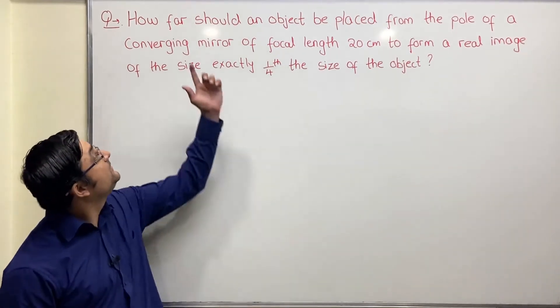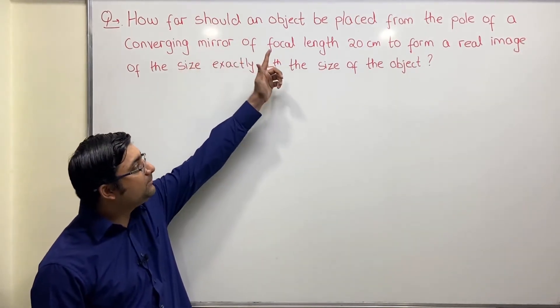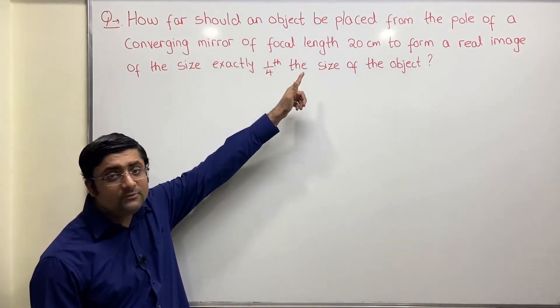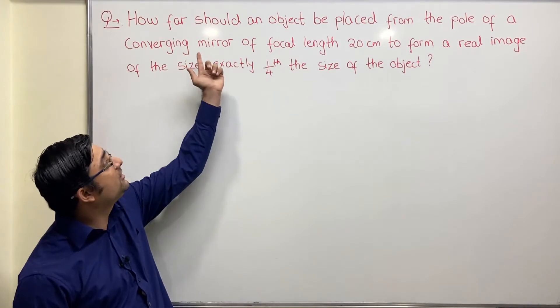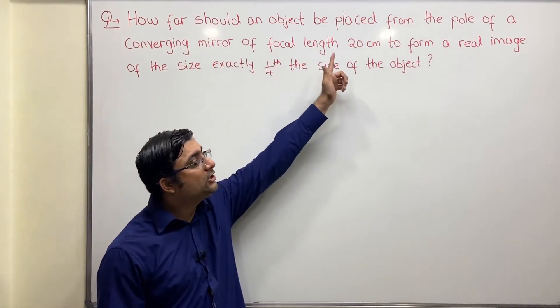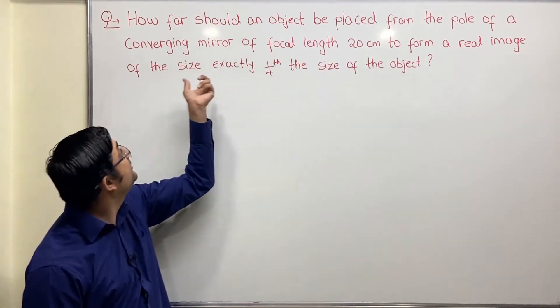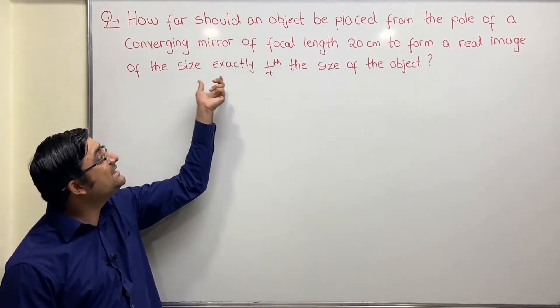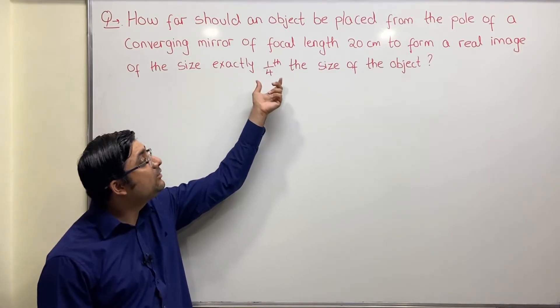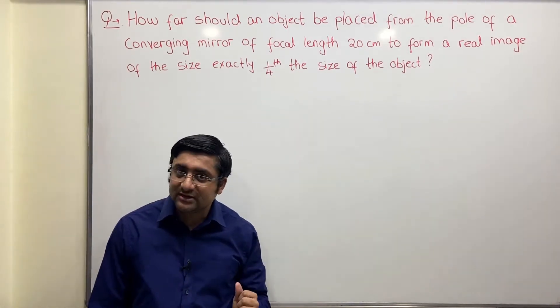How far should an object be placed from the pole of a converging mirror of focal length 20 centimeter to form a real image of the size exactly one fourth the size of the object?